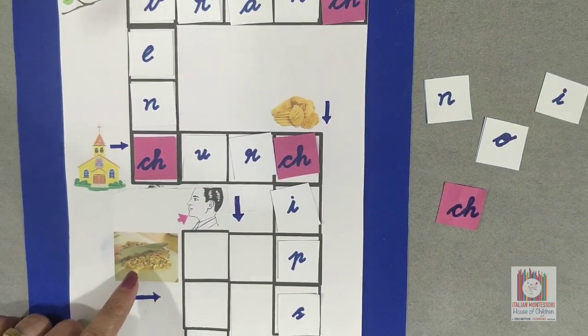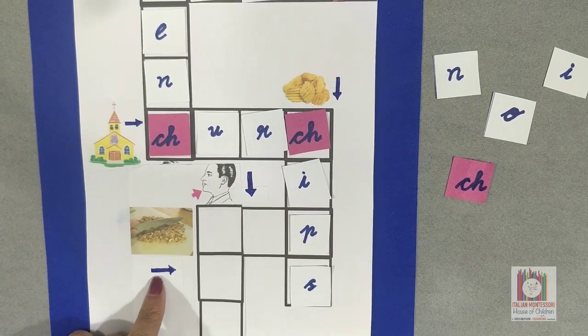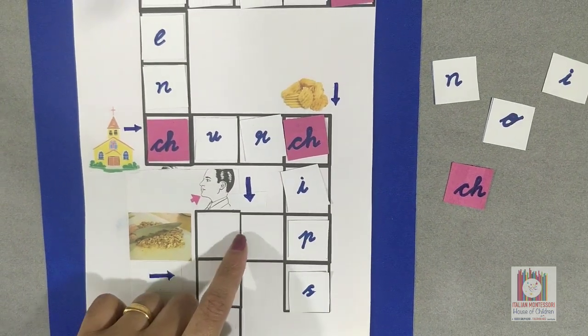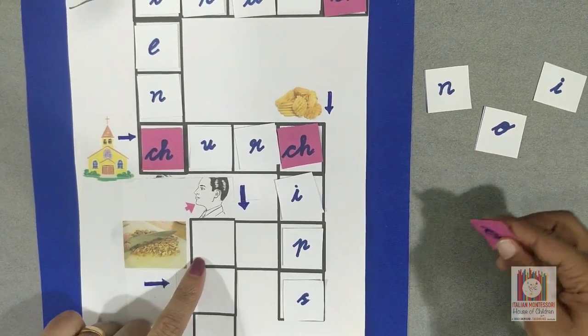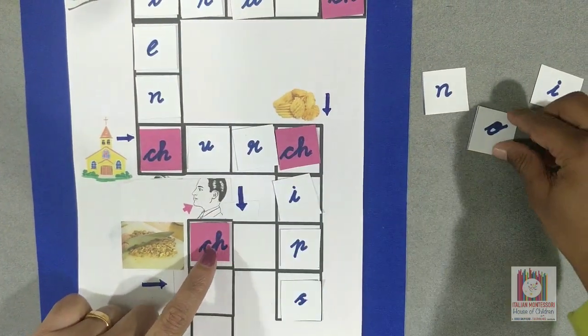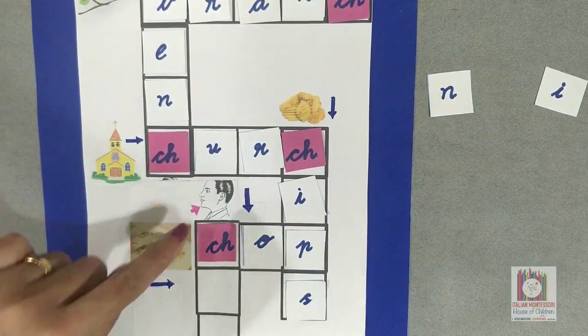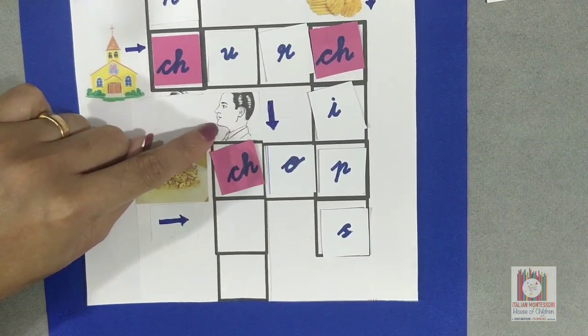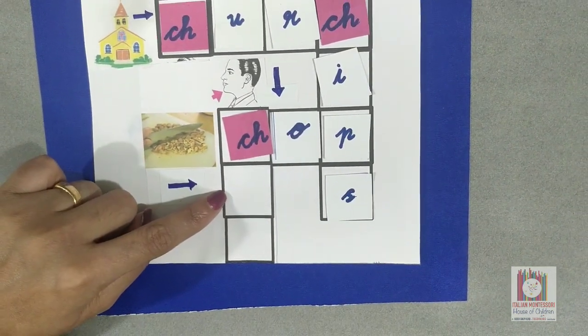Now can you tell me what picture is this? Chop. Chop. And this arrow shows right, we need to place the letters here. Chop. Good job. Now what picture is this? Chin. Chin. After CH, what did you hear?